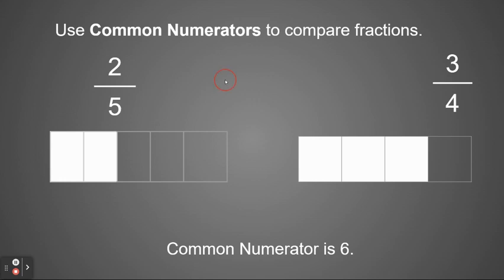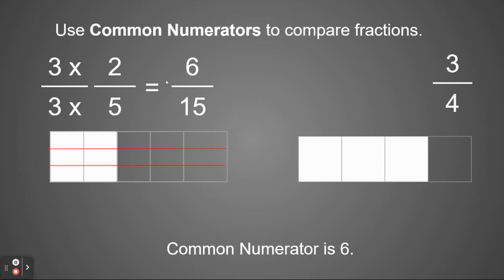to get 2 to 6, I need to multiply times 3. So I'm therefore going to break my picture into three parts. So 2 fifths times 3 is going to give me 6 fifteenths. If you see now, I have 1, 2, 3, 4, 5, 6 colored, and there's 15 total.